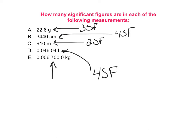For the last one, I have zeros at the beginning and at the end. I find my non-zero digits. Zeros to the left do not count. Zeros to the right do count if there's a decimal point, and there is. So I have 1, 2, 3, 4, 5 significant figures.